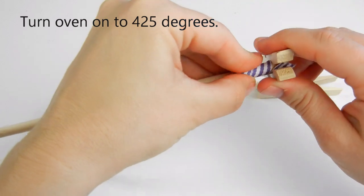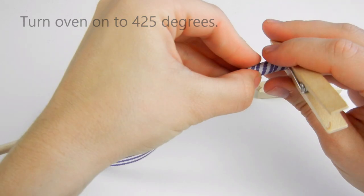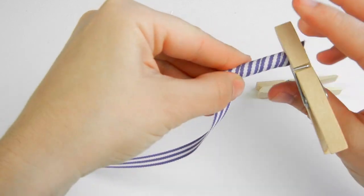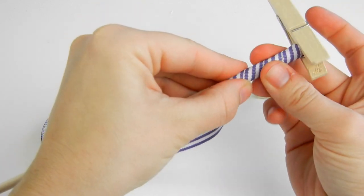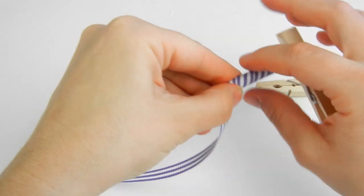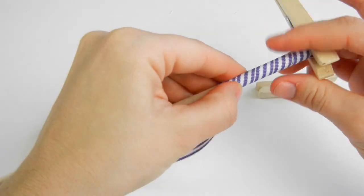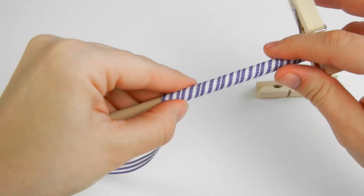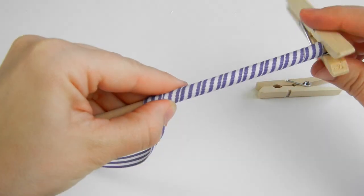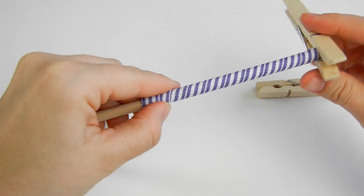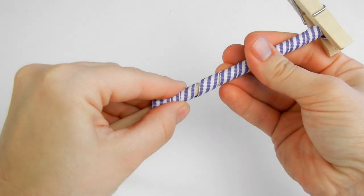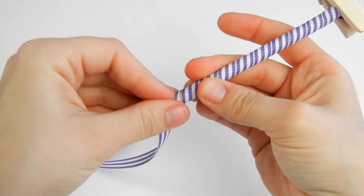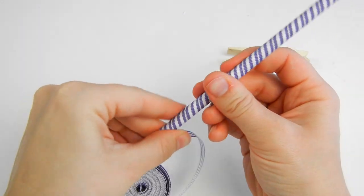Now you can place the ribbon close together or a little ways apart depending on your desired look. I like mine to be pretty close together, and just keep twisting and get to the end of your dowel.